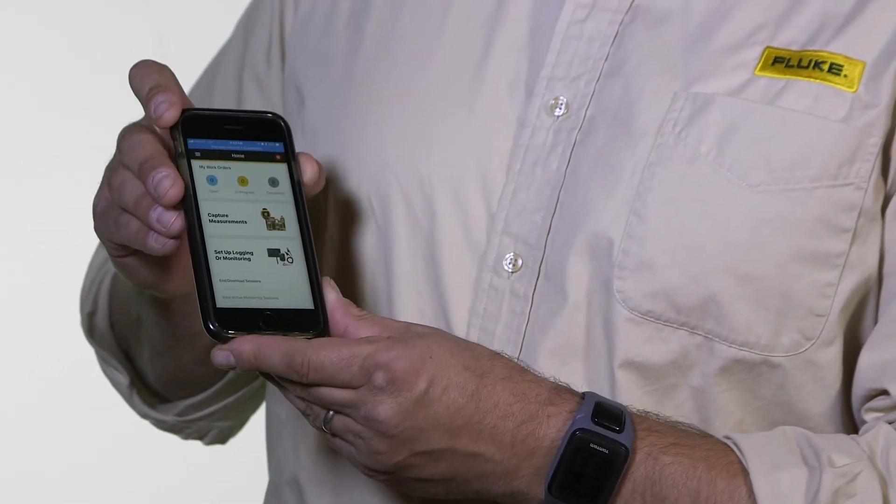These sensors are IP67 rated, so they can be used in harsh environments and can get wet. They're super easy to install just using your Fluke Connect app on your mobile device.